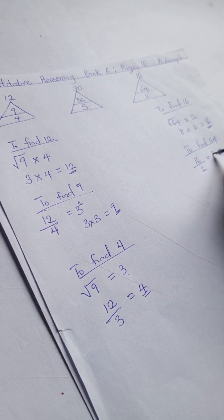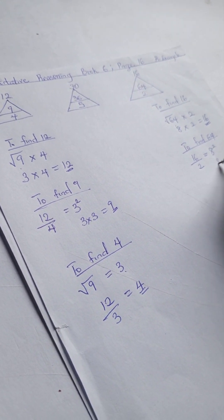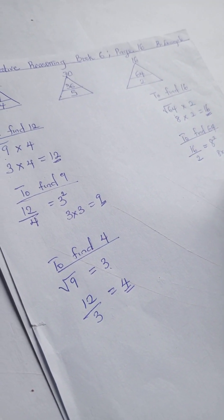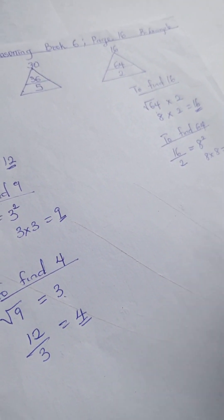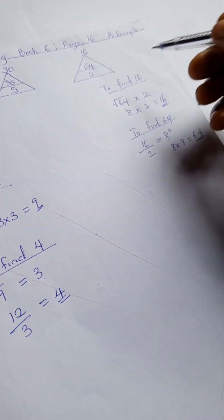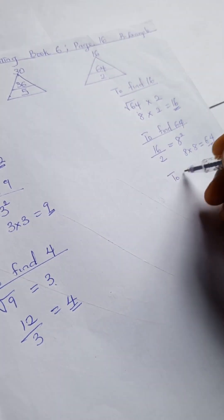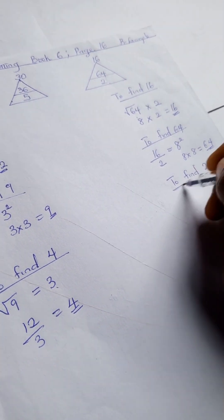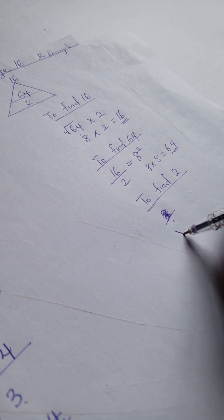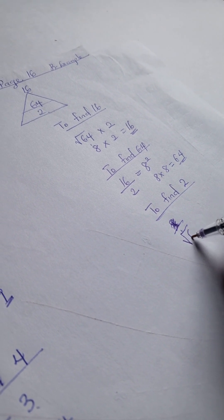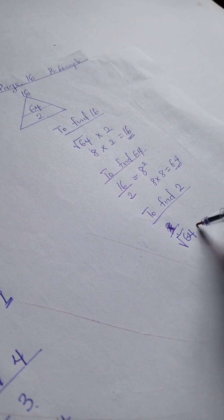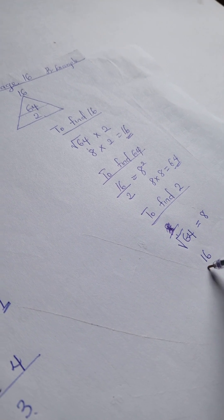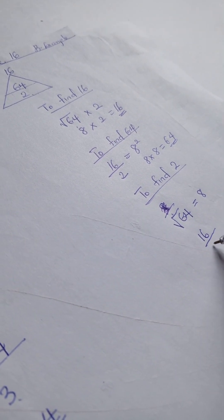And 8 squared, which is 8 times 8, is 64. To find 2, we take the square root of 64, which gives us 8, and 16 divided by 8 gives us 2.